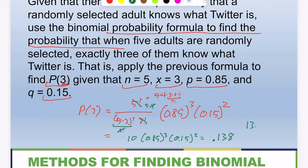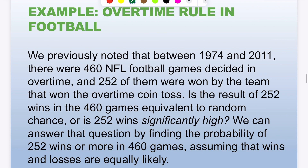That's about 13.8%. If I randomly select five people from this population, the likelihood of three of them knowing Twitter is about 13 percent.